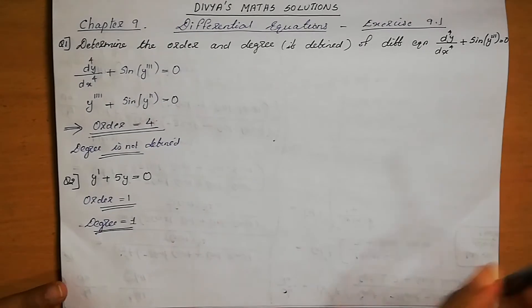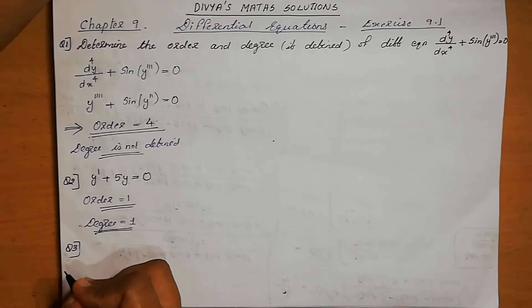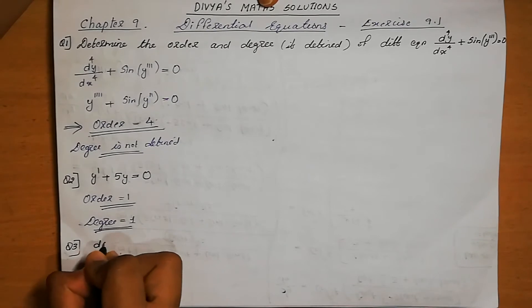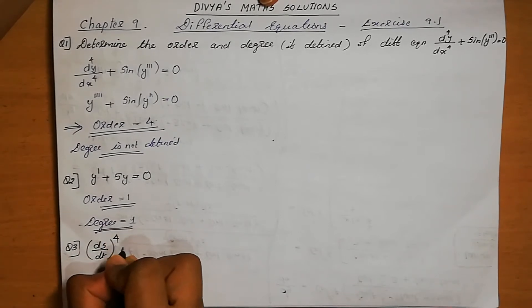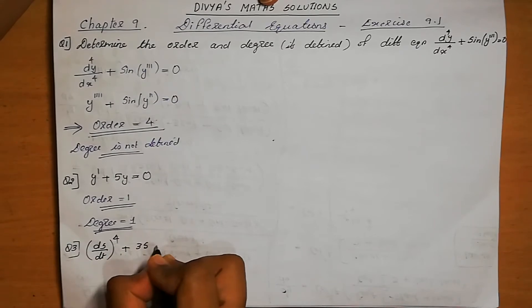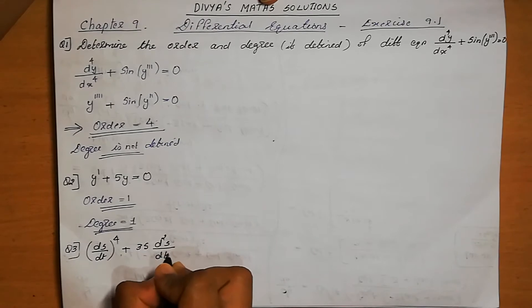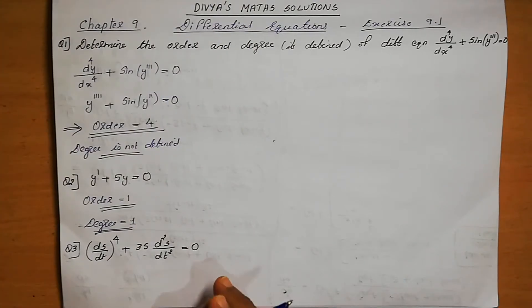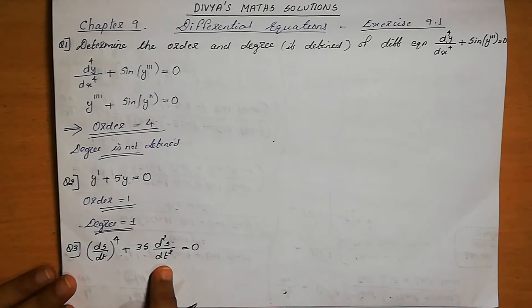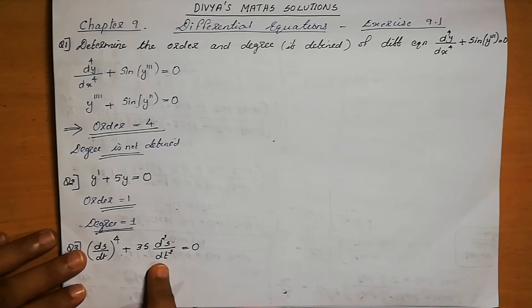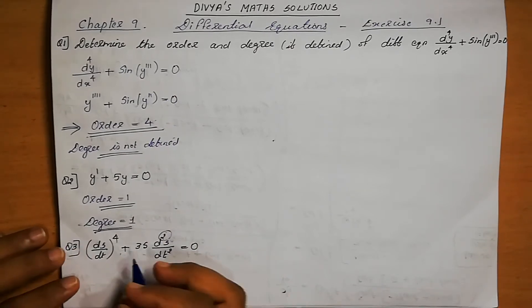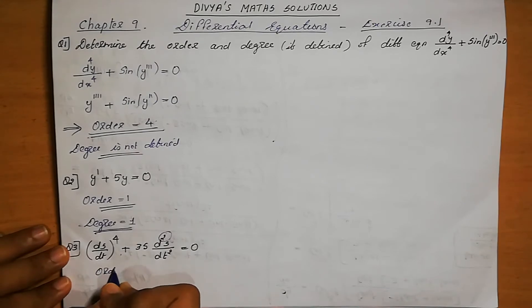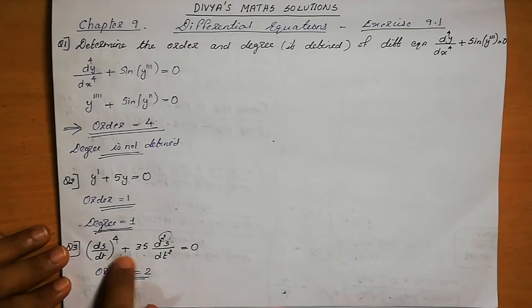Question number 3: (ds/dt)⁴ + 3s·(d²s/dt²) = 0. We need to find the order and degree. The derivatives present are ds/dt (first order) and d²s/dt² (second order). The highest order derivative is the second order, so the order equals 2.